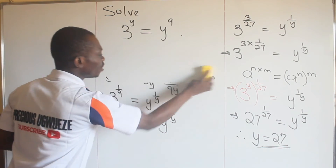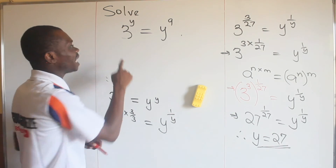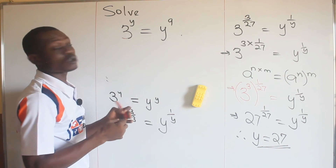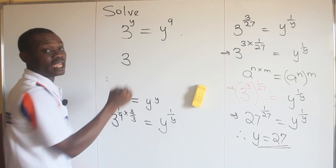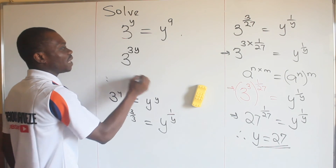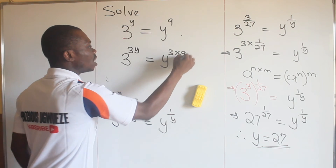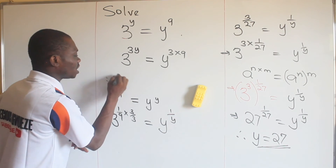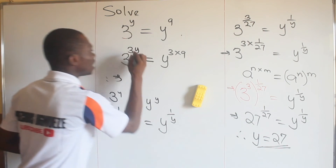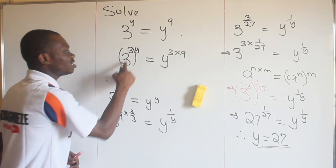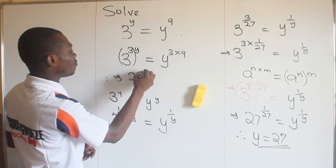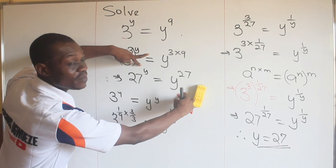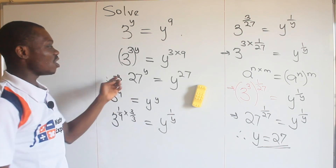All you need to do is get a number that when used as a power of three gives the same result as when it multiplies nine. That number is three. Multiplying both sides by three, you can bracket three raised to the power of three, which immediately gives 27 raised to the power of y equal to y raised to the power of 27. Since 27 is the base here and the power there, and y is the power here and the base there, y equals 27.